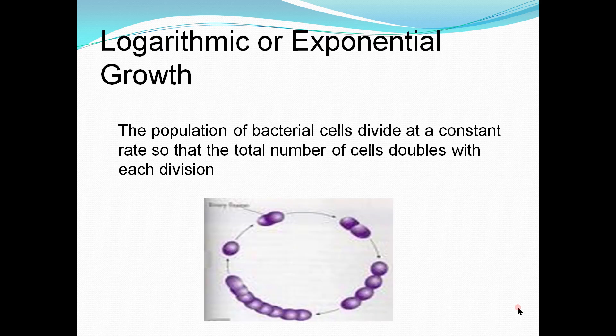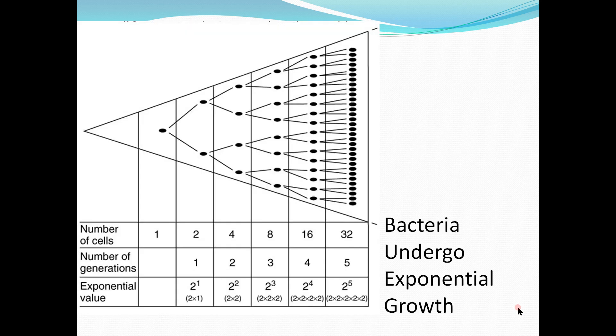The population of bacterial cells divides at a constant rate, and the total number of cells doubles with each division. The division of bacteria is basically controlled by all environmental conditions — the doubling rate depends on environmental conditions such as temperature, availability of nutrients, and environmental pressure. All these things affect bacterial growth.